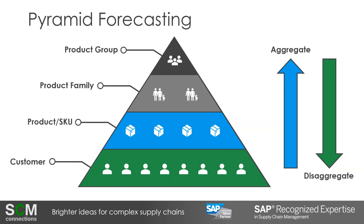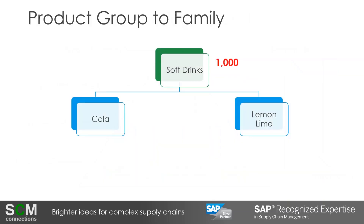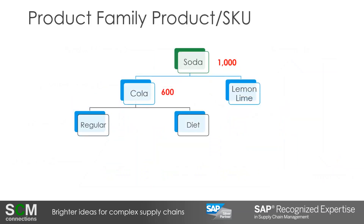Now let's walk through an example of the soft drinks manufacturer. Let's say I have a forecast of a thousand units for the soft drinks product group. To split the forecast into product families, I can say that Cola will represent 60% of sales, and Lemon Lime will get the remaining 40%. Therefore, I'll forecast Cola sales to be 600 units and Lemon Lime to be 400 units. Then I can take my 600-unit forecast for Cola and split that into regular and diet products.